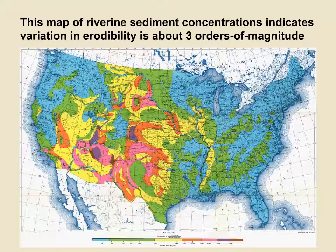Sediment concentrations in highway runoff may be affected by the erodibility of local soils. This map of the annual average riverine sediment concentrations indicates that variation in erodibility across the country may be about three orders of magnitude. The blue areas are less than 300 mg/L, green areas range up to about 2,000 mg/L, yellow areas up to about 7,000 mg/L, orange areas up to about 15,000 mg/L, pink areas up to about 30,000 mg/L, purple areas up to about 50,000 mg/L, and the brown areas exceed 50,000 mg/L. This map may also be used to interpret variations in the highway runoff dataset, and practitioners can compare monitoring site locations to these sediment concentrations to select representative sites for a given area.